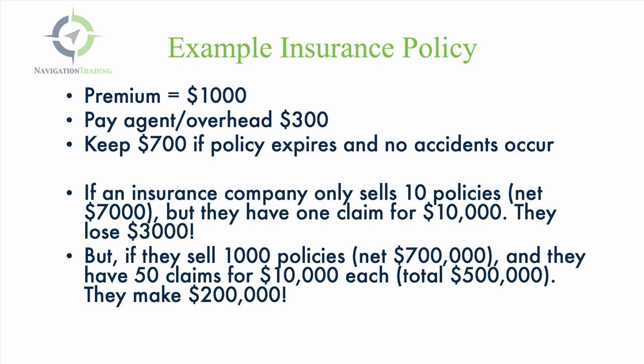That's why they want to sell a lot of policies. If they sell 1,000 policies and they net $700,000 in premium after expenses, but they have 50 claims at $10,000 each — that's a total of $500,000 — they still make a net of $200,000. That's how an insurance company makes money: limit the number of claims, sell a lot of policies, and diversify over many insureds and many areas of the country.